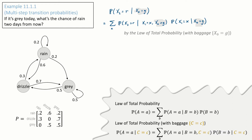And that's what I used up above. I used the law of total probability, and I carried the baggage x0 equals g around in each of the expressions.